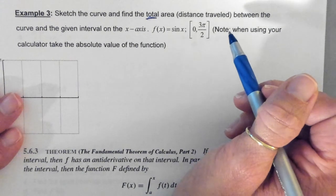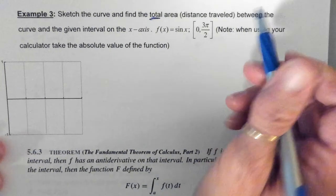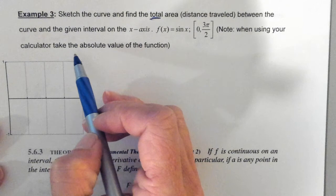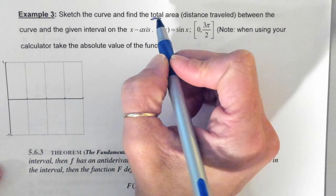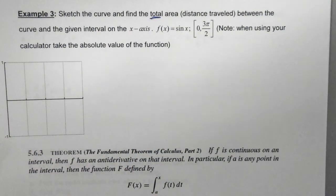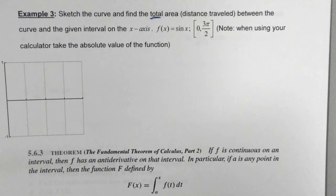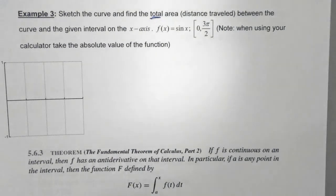We're not going to use the calculator. I will show you on the calculator, but it says when you are using your calculator, make sure you take the absolute value. The calculator will take into account for you wherever your values will be negative, meaning where your graph falls below the x-axis.